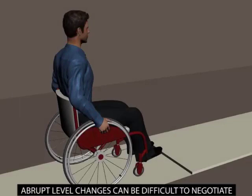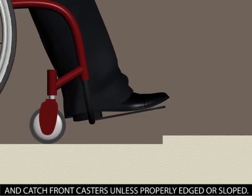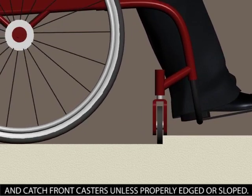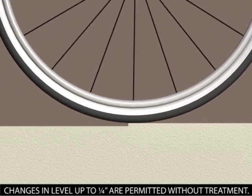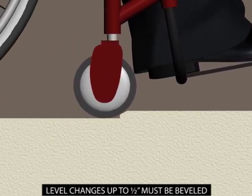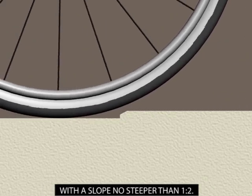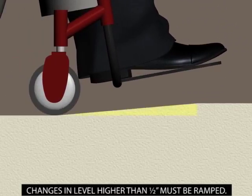Abrupt level changes can be difficult to negotiate and can catch front casters unless properly edged or sloped. Changes in level up to one quarter inch are permitted without treatment. Level changes up to half an inch must be beveled with a slope no steeper than one to two. Changes in level higher than half an inch must be ramped.